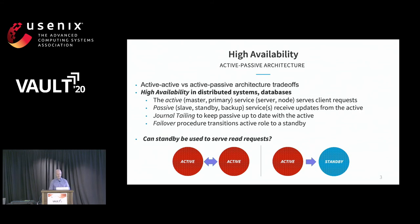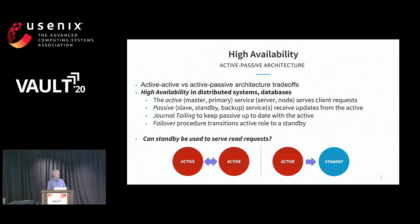Some terminology: clients or users go to the active node, they talk to the active node to create or read files. The active transforms updates to the standby node through a process called journal tailing. The standby is used for failover — when the active fails, the standby can take over. The question we're addressing is: can this standby replica be used for read requests? It has all the same information, so why not use it?